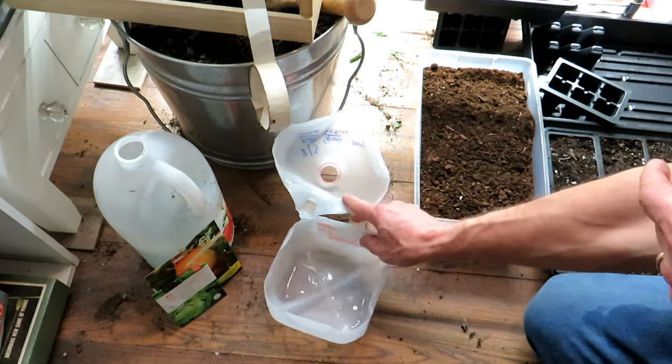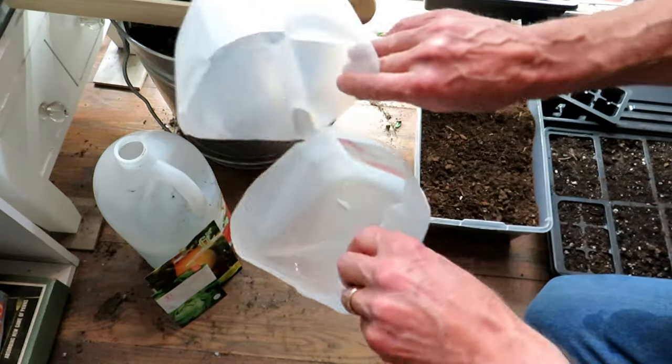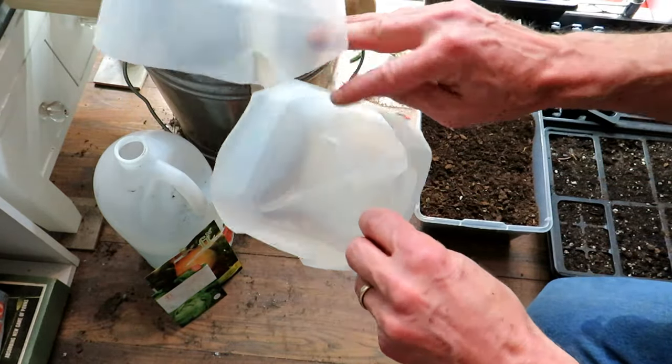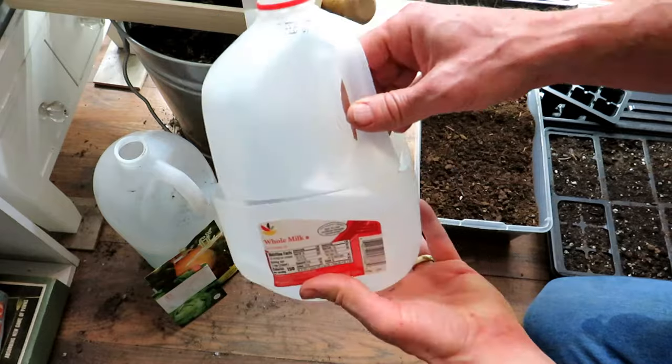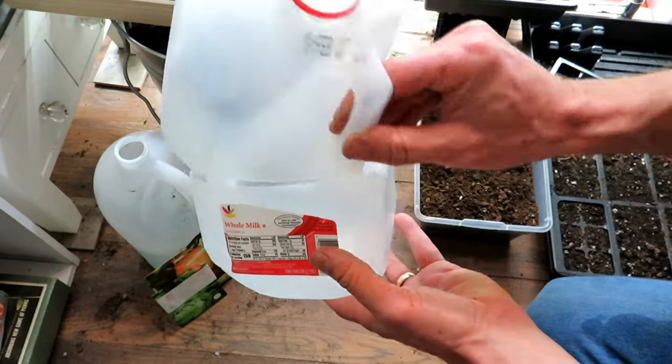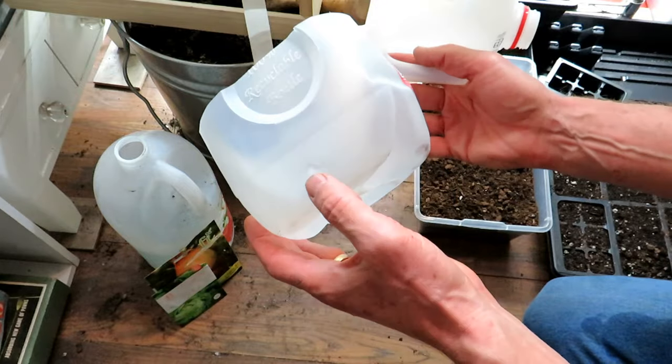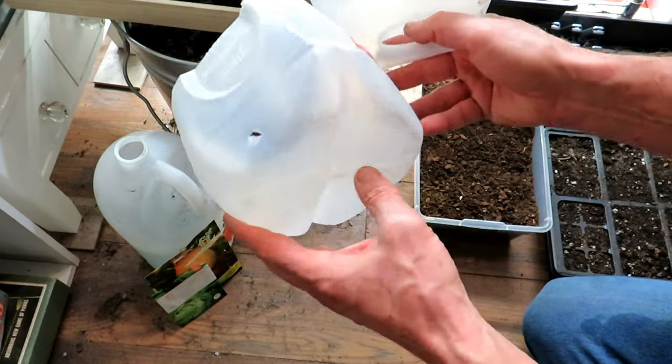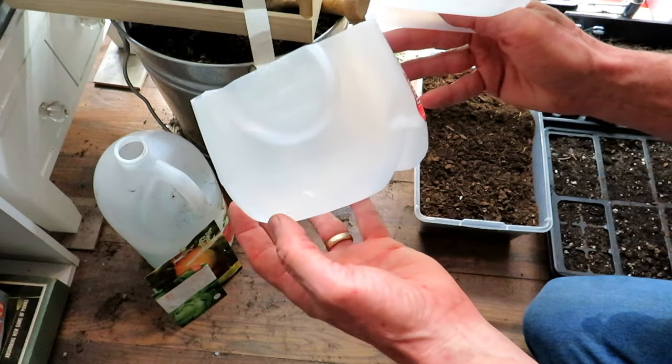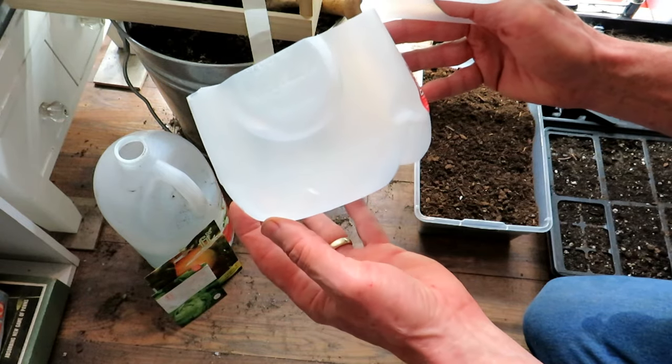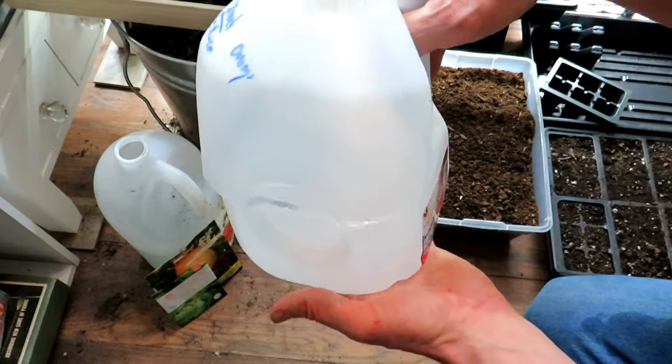So to set it up, a lot of times people use milk containers. This is a one gallon milk container and you're just going to cut around about midway and leave a little bit of a flap on there so that this doesn't blow off. We're going to tape it down. You also want to put a hole in there. A lot of people put holes in the bottom.